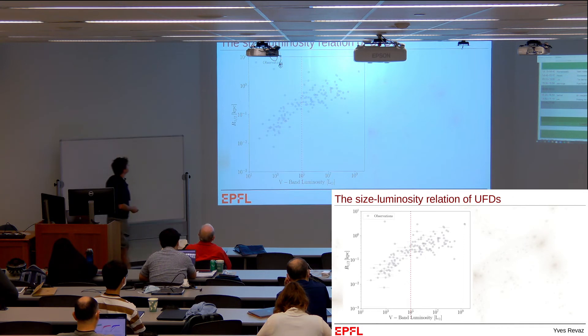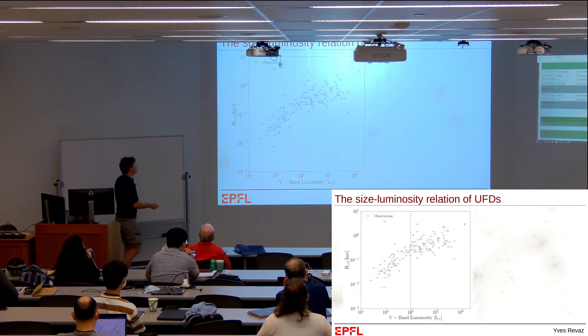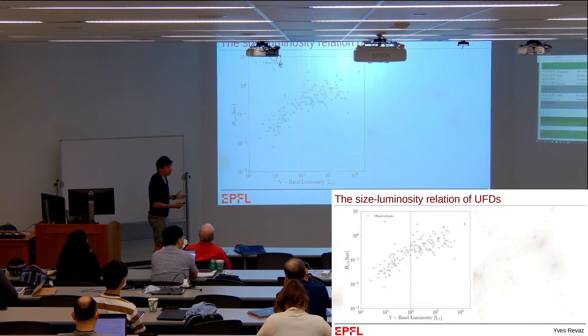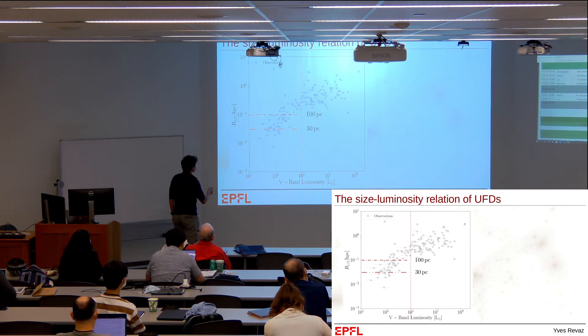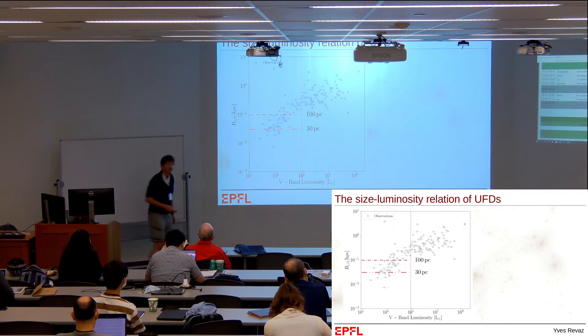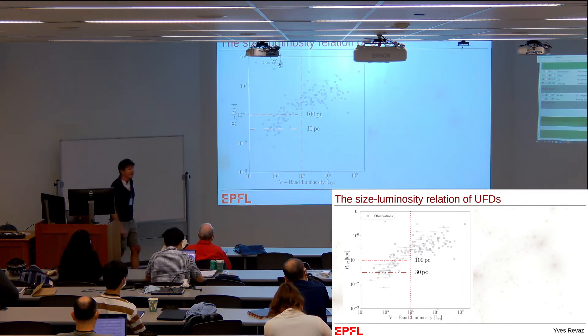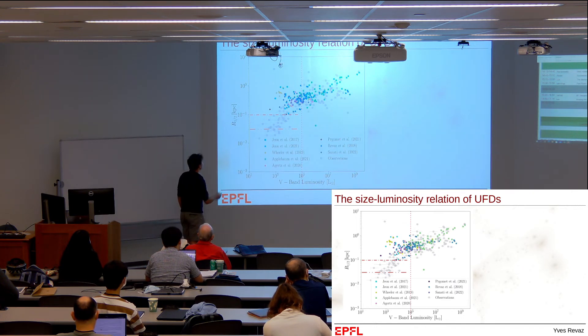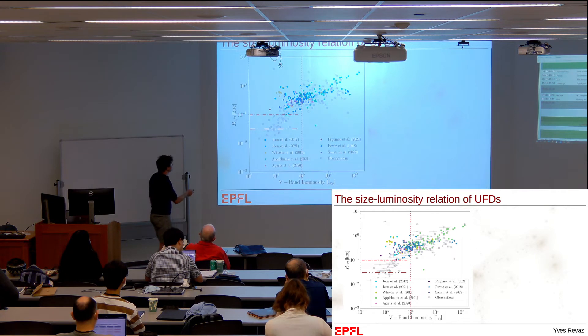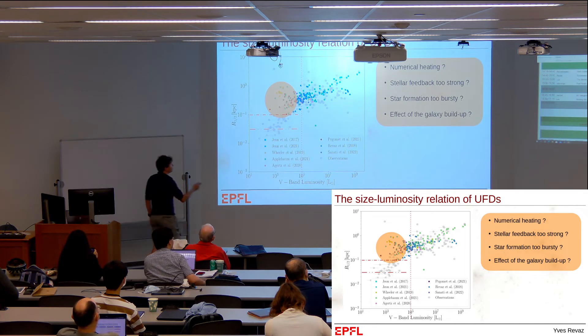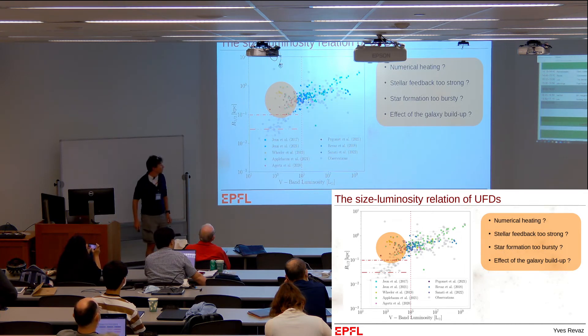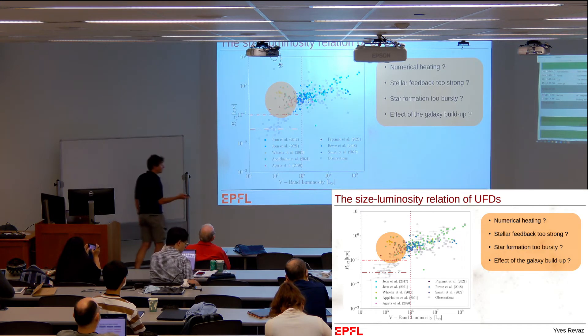Very quickly, I wanted to finish with the size-luminosity relation. Looking at the correlation between the size of the system and luminosity, faint systems are smaller. I insist that they're very compact with sizes lower than 100 parsecs, even some cases lower than 30 parsecs—extremely compact. If you compare with observations, no models are able to reproduce these very compact ultrafaint dwarf galaxies. I think this is a very interesting point. Where is the problem? Is it due to lack of resolution or numerical heating? Is it too strong feedback that generates star formation that's too bursty?